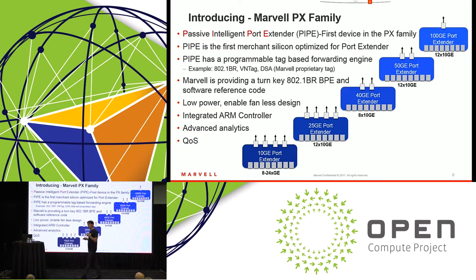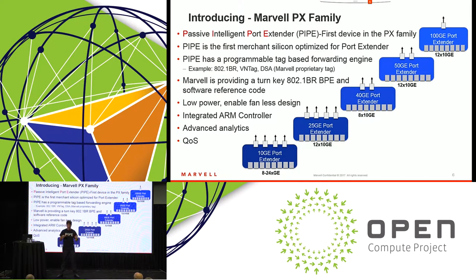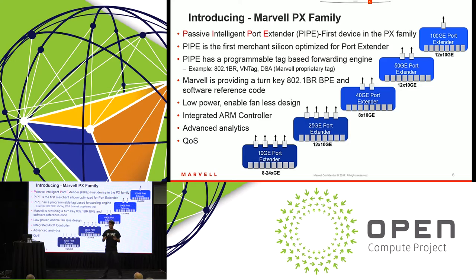It also integrates an ARM controller, so all the management and protocol running between the port extender and the controlling bridge can run in-band using the on-chip CPU — you don't actually need a CPU on the board, no external management. There are also advanced analytics that enable the controlling bridge to understand what's happening in that layer: packet drops, congestion — all sent to the controlling bridge. Quality of service is maintained across all layers with a full buffer and eight priority queues that can differentiate between high and low priority packets.